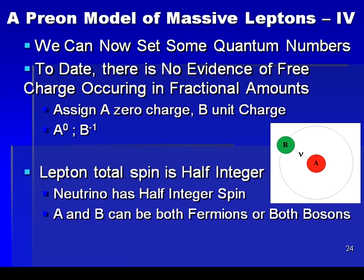At this point in our development, we can now move on to assign some quantum numbers to our prions. A first point of analysis is to note that, to date, no experiment has shown the existence of free electric charge in fractional amounts. For that reason, we will begin by arbitrarily assigning our new A prion to have zero electric charge, and our new B prion to have a charge of minus 1. Since the neutrino has zero electric charge, this will leave our leptons as having a charge of minus 1, as it must. Note that the antimatter leptons will have a charge of plus 1, but we will deal with that topic later.